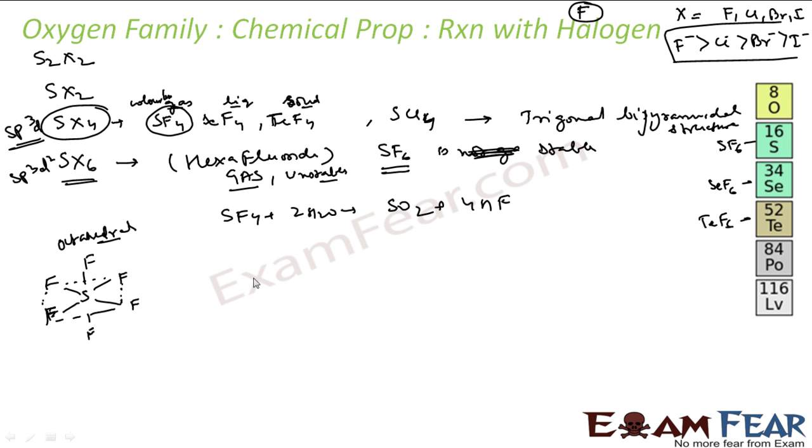See the structure of SF4. This is the structure. I have S, I have F, I have F. And this is a lone pair of electrons. You see one, two, three, four. SP3D. This is SP3D hybridized.